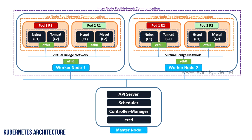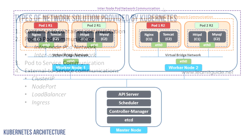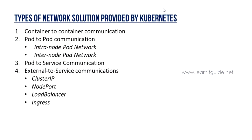This is a basic Kubernetes architecture where you have some worker nodes and pods running on them with a couple of containers. When you have these many components, how do they establish connections to make the application accessible over the network? Kubernetes networking provides solutions to allow these components to communicate with each other using network concepts for more effective communication.